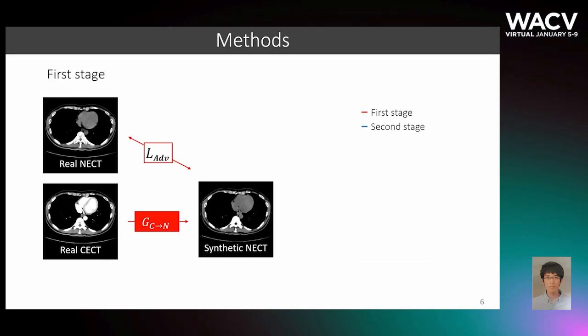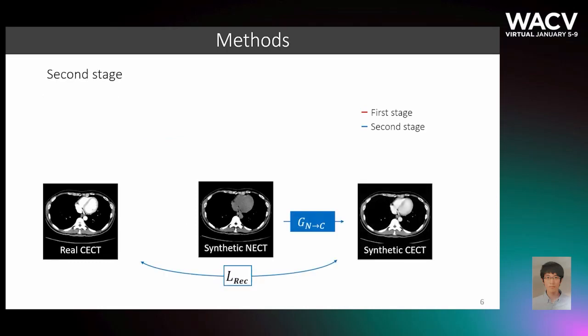In the first stage, we train an auxiliary network GC2N with an adversarial loss that removes the effect of contrast material in a real CECT. This is more feasible than synthesizing CECT from NECT due to the monotonic and less patient-specific appearances in NECT images. Then, we train our target network GN2C with L1 and perceptual loss using pairs of aligned synthetic NECT and real CECT images. Different from the adversarial loss that only provides domain-level supervision, these reconstruction losses can provide patient-specific supervision.